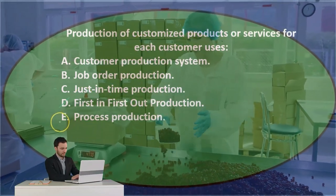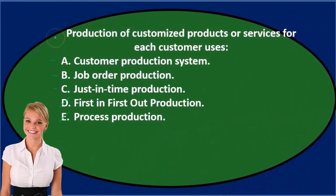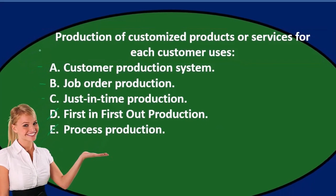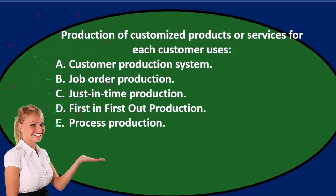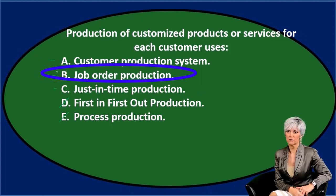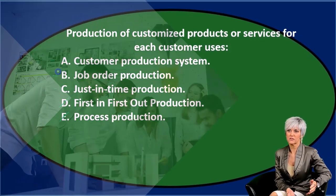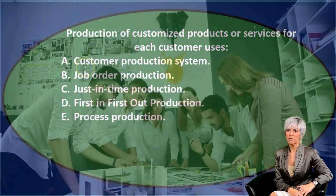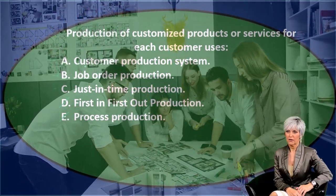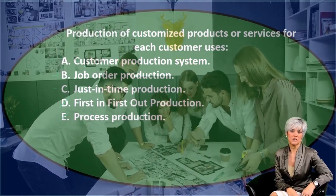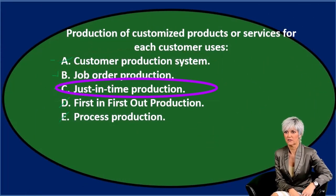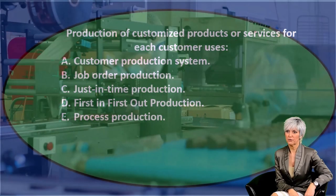So let's go through it again. Production of customized products or services for each customer uses either A) customer production system, B) job order production, or C) just-in-time production. Of those three, I would think it would be B because we're basically working on a job order production type of problem. Option A doesn't seem right because it sounds like a made-up term that sounds plausible — 'customer production system' — but it's not an actual term typically used in the costing process.